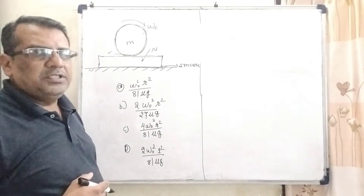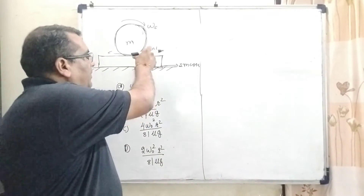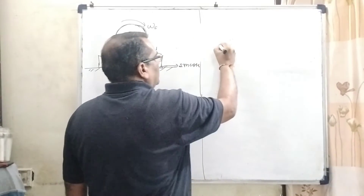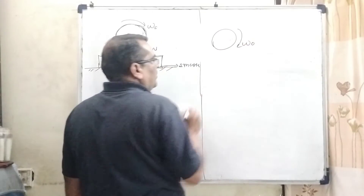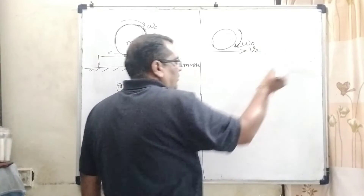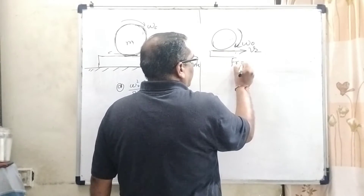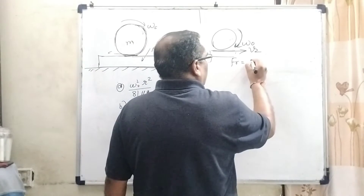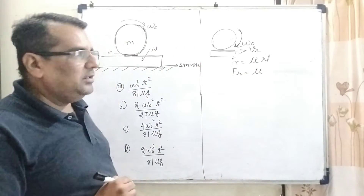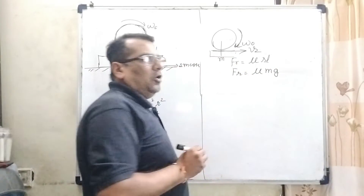Now let's see what the question says. The initial velocity of the sphere is zero. But when it is spinned and kept on the plank, friction force is applied. The sphere is given angular velocity omega naught in one direction, and the translating motion is in the forward direction, that is V2. The friction force is equal to mu into N, where N equals mg, so the normal force becomes mg.